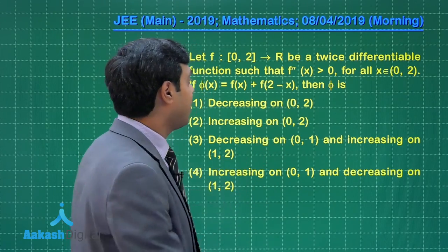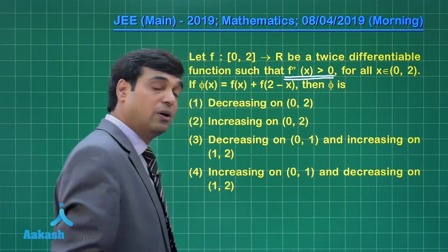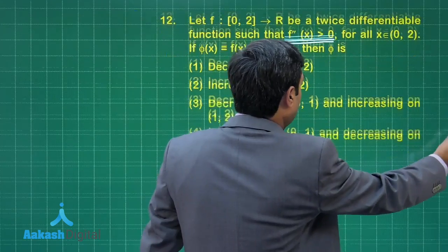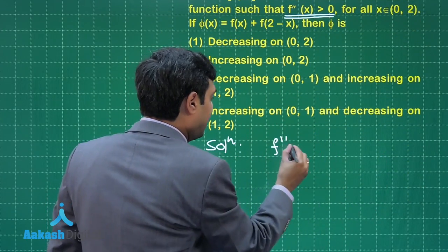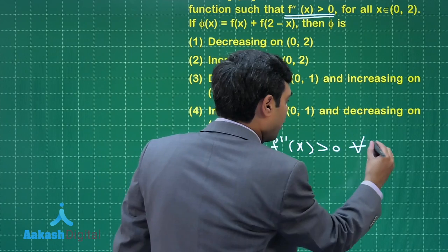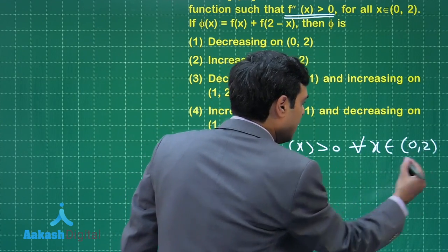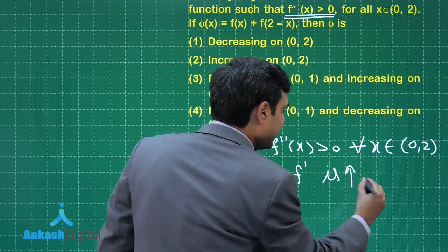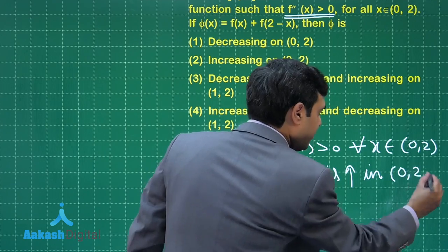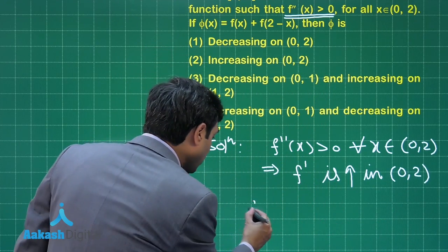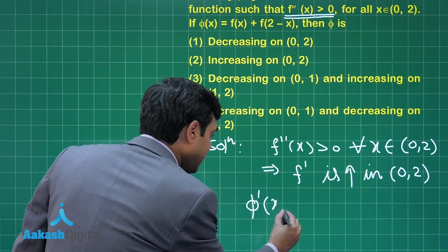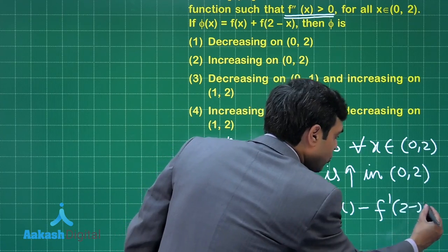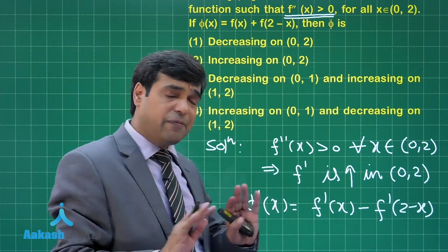Since f''(x) > 0 for all x in (0, 2), the function f' is increasing on (0, 2). Taking the derivative: φ'(x) = f'(x) − f'(2 − x).